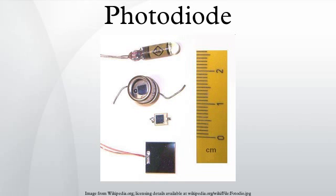Dark current must be accounted for by calibration if a photodiode is used to make an accurate optical power measurement, and it is also a source of noise when a photodiode is used in an optical communication system.